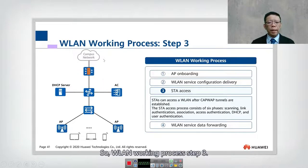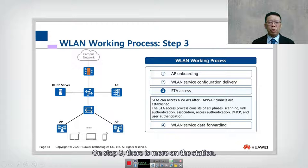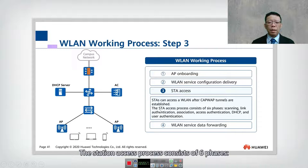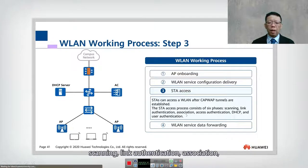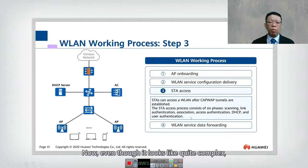WLAN working process step number three. Steps one and two are more complex. In step three, the STA can access the WLAN after a cable tunnel is established. The station access process consists of six phases: scanning, link authentication, association, access authentication, DHCP, and user authentication.